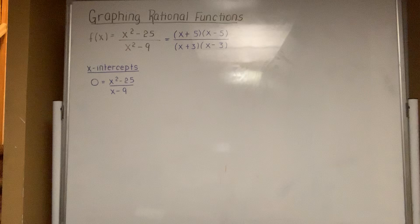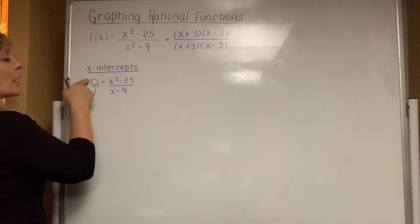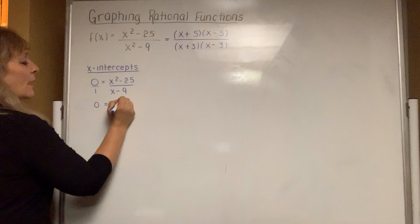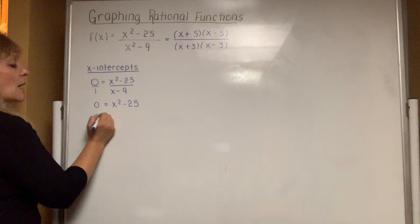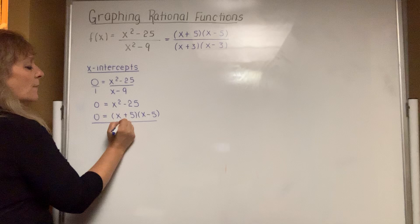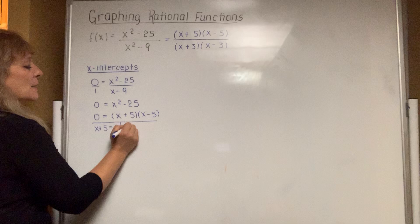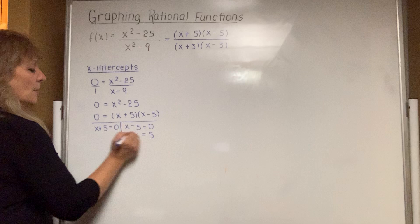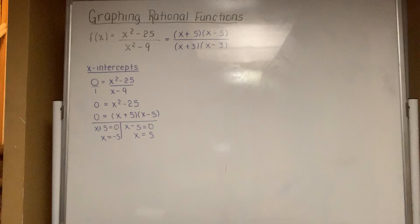To find the x-intercepts, you change f of x into zero, then cross multiply to solve. So x squared minus 9 times zero is still zero, and 1 times x squared minus 25 is still x squared minus 25. Factor the right-hand side because it's a quadratic: x plus 5 times x minus 5. Set each factor equal to zero — x plus 5 equals zero and x minus 5 equals zero — giving two answers: negative 5 and positive 5.